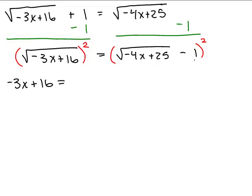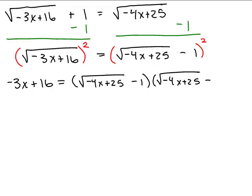Now on the right side, you're squaring a binomial. So I'm going to show all the steps here. That's the square root of negative 4X plus 25 minus 1 times the square root of negative 4X plus 25 minus 1.